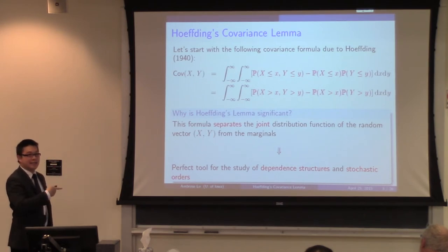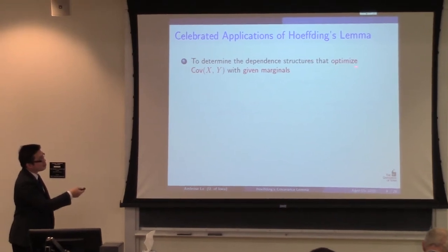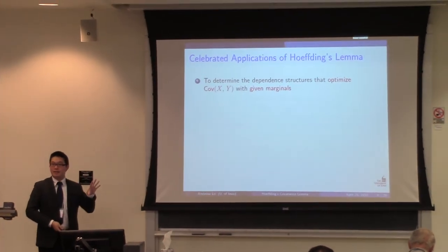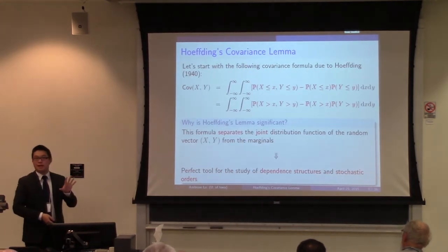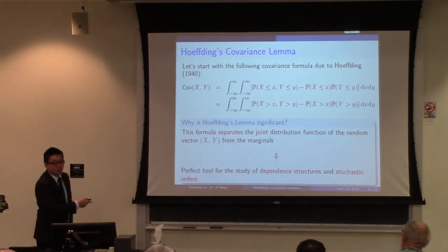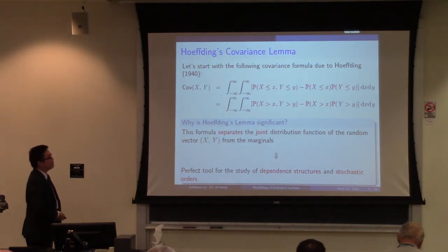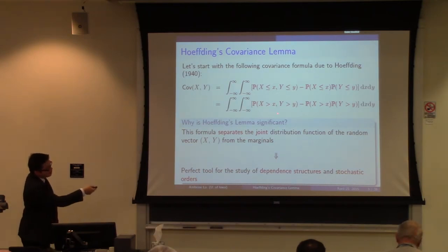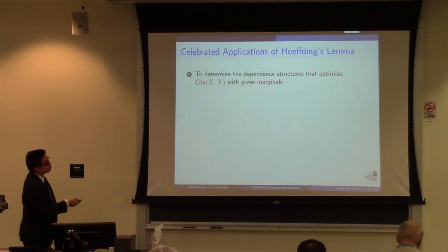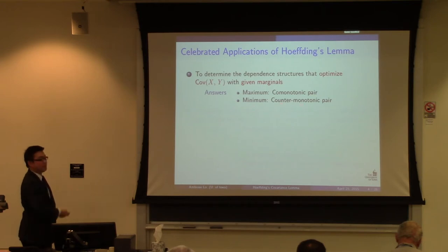In the literature there are at least two applications of Hoeffding's lemma. The first application is to determine the dependence structures that optimize the covariance when we fix the marginal distributions. When the marginal distributions are fixed, the marginal terms are fixed, so what we can vary is the joint CDF or the joint survival function. If we want to optimize the left-hand side, we optimize the joint CDF. The maximum covariance is achieved by the comonotonic random vector, and the minimum covariance is obtained by the counter-comonotonic random vector.